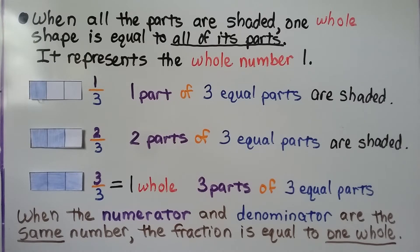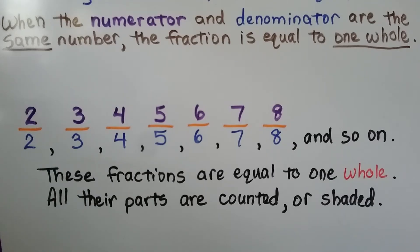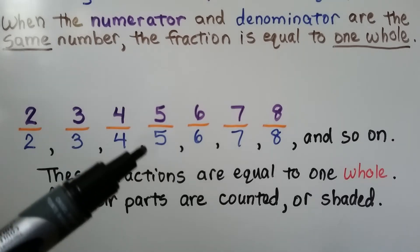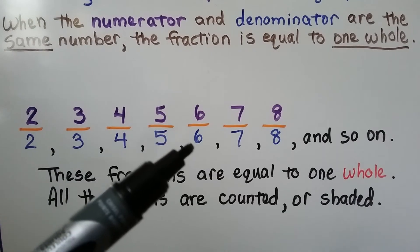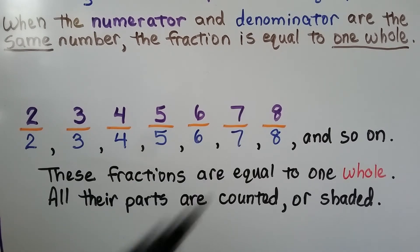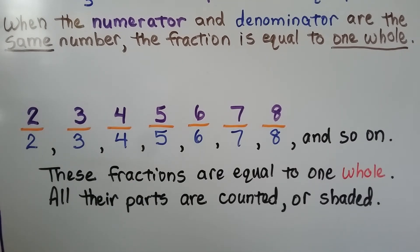It's the whole thing. When the numerator and denominator are the same number, the fraction is equal to one whole. This is two halves, three-thirds, four-fourths, five-fifths, six-sixths, seven-sevenths, eight-eighths, and so on. These fractions are all equal to one whole — all the parts are counted or shaded.